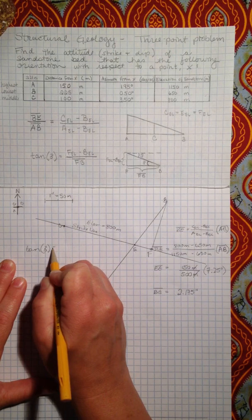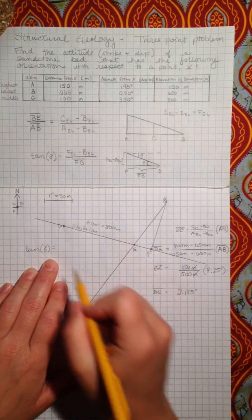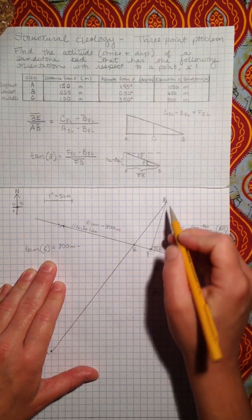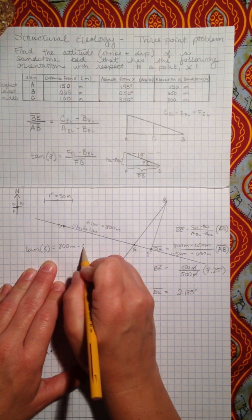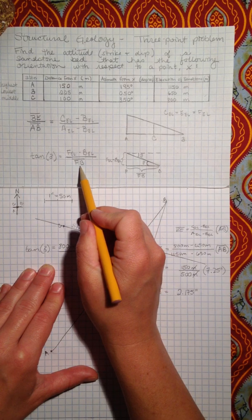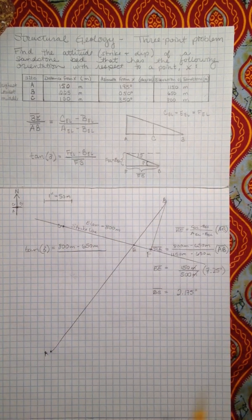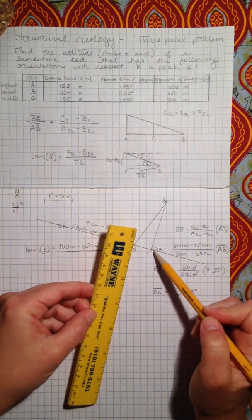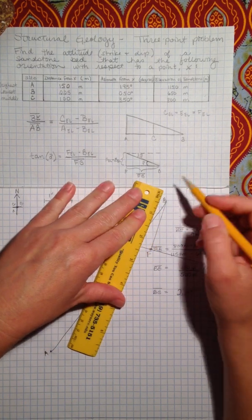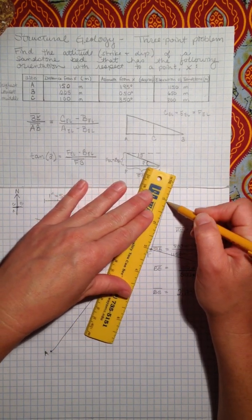We will say that the tangent of delta of our dip equals the F elevation which is 800 meters minus B elevation which is 650 meters divided by the distance between F and B. And so this is a case where we also need to find graphically the distance but in this case we need it to be meters. We need our meters to cancel out here so we can't leave it in inches because now we're thinking about real world stuff.